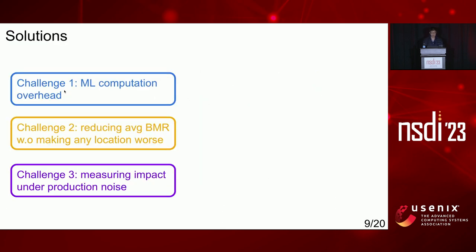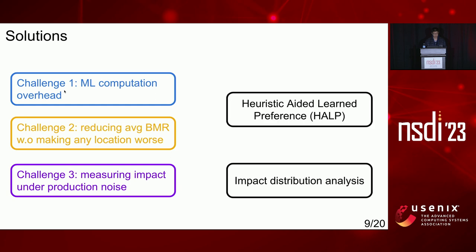To solve these three challenges, we propose HELP — heuristic-aided learned preference — and impact distribution analysis. We use HELP to solve the first two challenges and impact distribution analysis to solve the last one. Next, I will first introduce HELP.